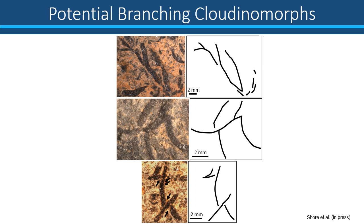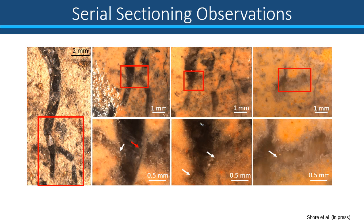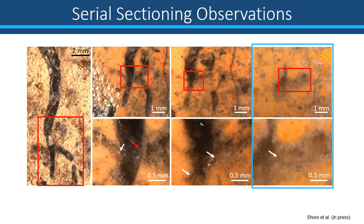We noticed in the field that some of the tubes seem to look as though they are branching from the bedding surface. However, evidence of branching can only be proven by the presence of a shared cavity. To determine whether these Cloudinomorphs have a shared cavity, multiple samples underwent serial sectioning, where small regular increments of the sample were ground away with an image taken after every section. In early stages of serial sectioning, we can see the tube wall highlighted by the red arrow, with early isopachous cement going off either side of the wall. However, with continual serial sectioning, we see the disappearance of the parental wall highlighted by the white arrow, indicating a shared cavity between the two tubes. Further serial sectioning shows a continual sharing of this cavity, highlighted by the continuation of the grey isopachous cement from the parental tube to the daughter tube.